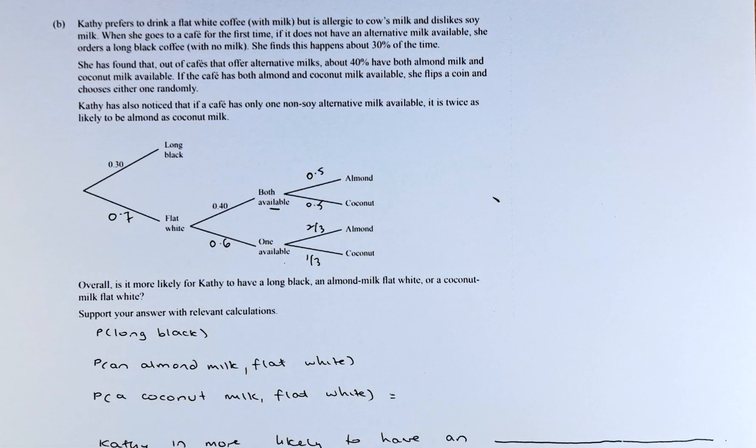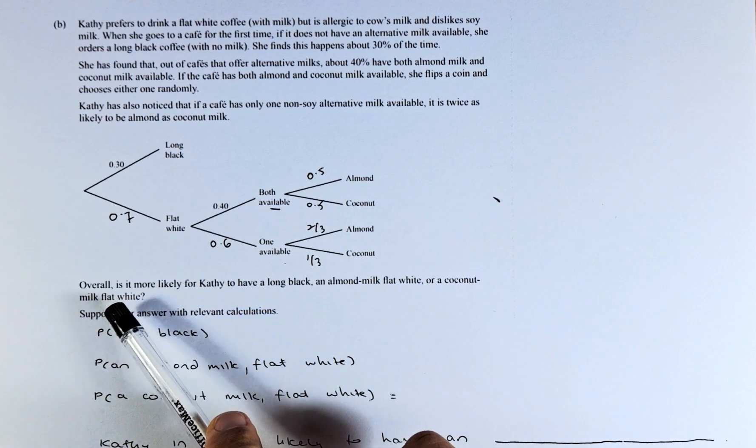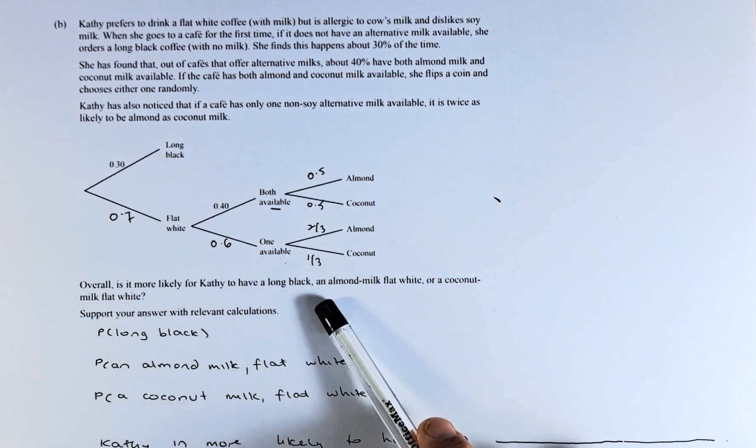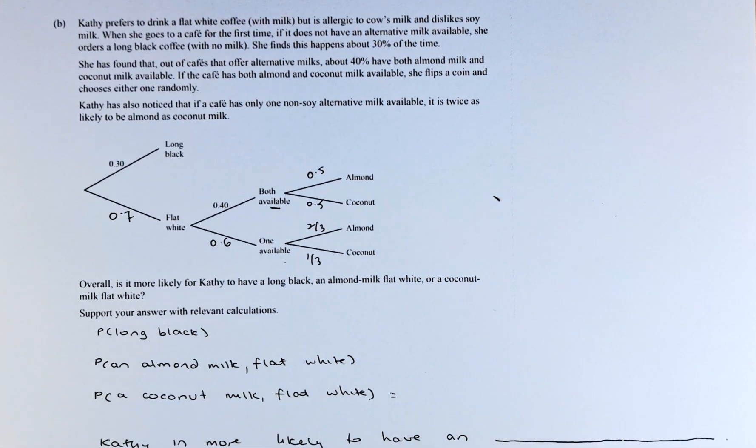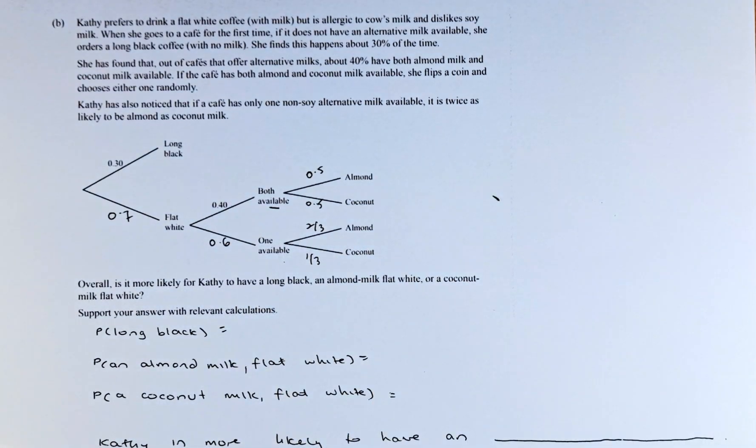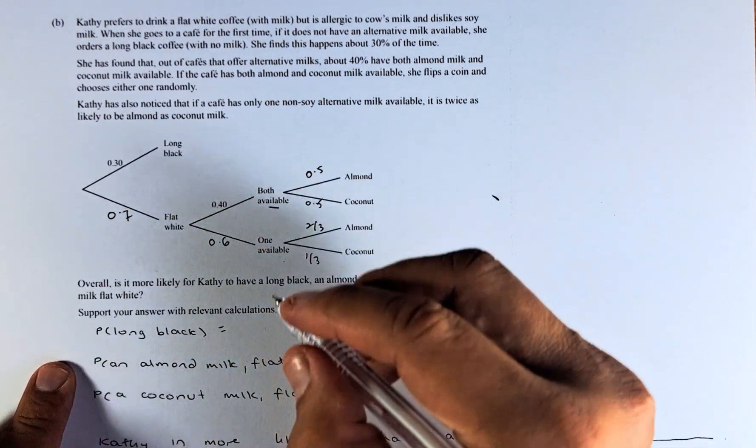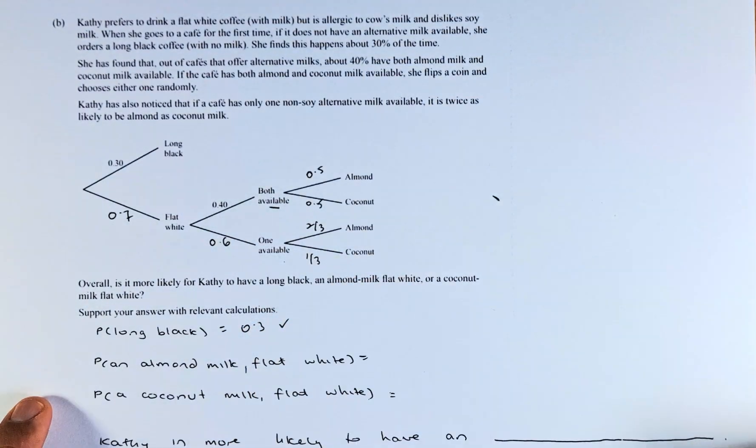Once we know this, we can calculate the probability of all the possibilities. Overall, is it more likely for Cathy to have a long black, an almond flat white, or a coconut milk flat white? We are going to calculate all three probabilities and compare which one is highest. For long black, very simple, there is only 0.3 and that will be the answer.